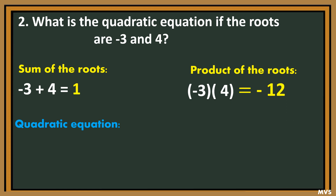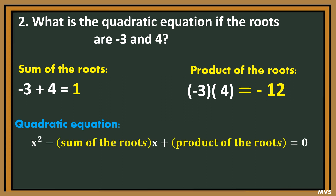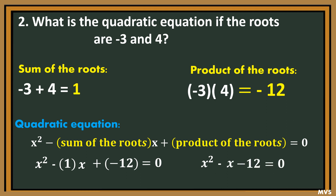Then, in the quadratic equation, we will have x squared minus the sum of the roots times x plus the product of the roots, equal to 0. Copy x squared, then substitute the value for the sum of the roots, which is positive 1, then copy x plus the product of the roots, which is negative 12, equal to 0. Simplify: x squared minus x minus 12 is equal to 0.